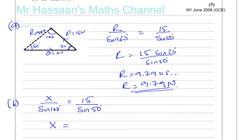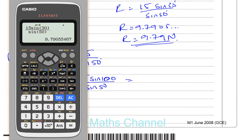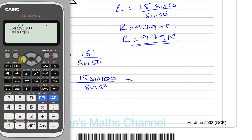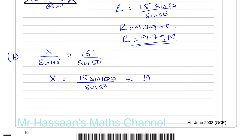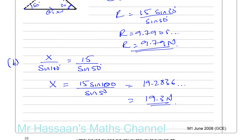So X is equal to 15 times sine 100 over sine 50. That gives 19.2836..., so X is 19.3 Newtons to 3 significant figures. There's no G involved, so we can't round to 2SF. And there we have the answer to that question.